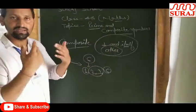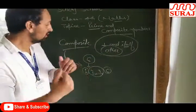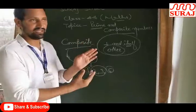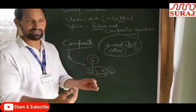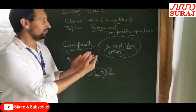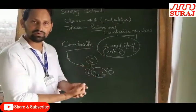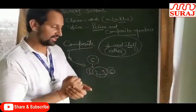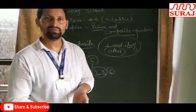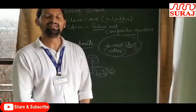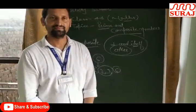The other number divided beyond one and itself is called the composite number. I hope you have understood that. Thank you and have a nice day.